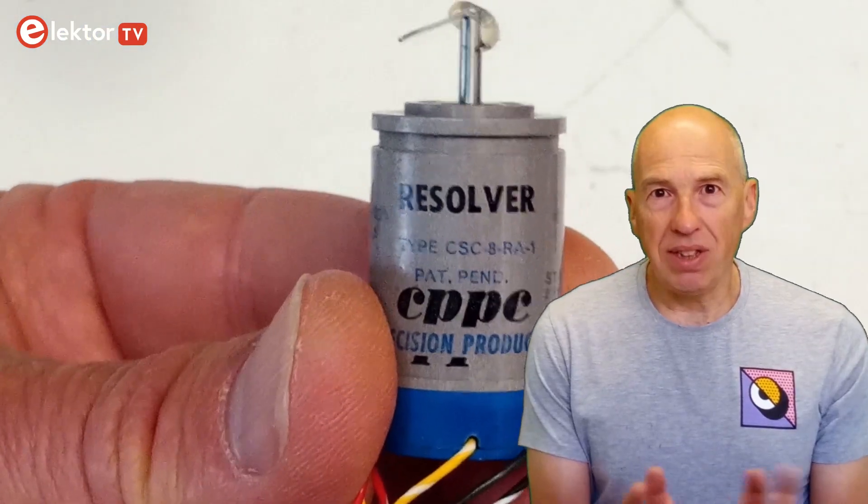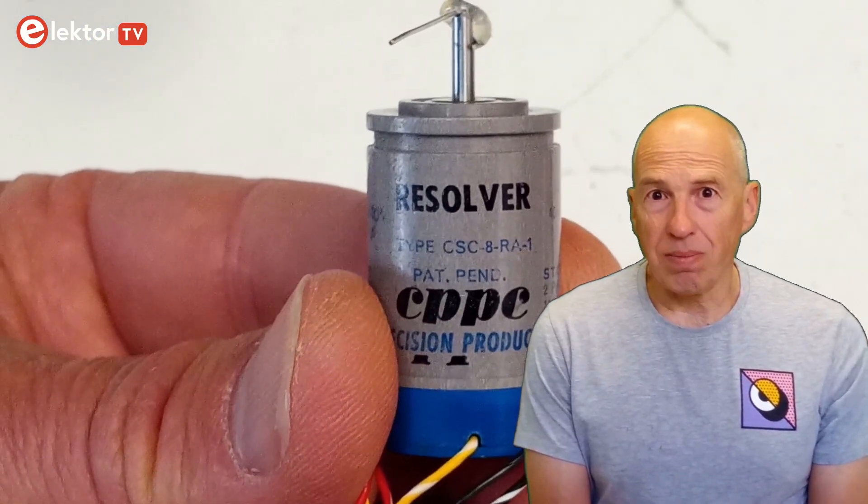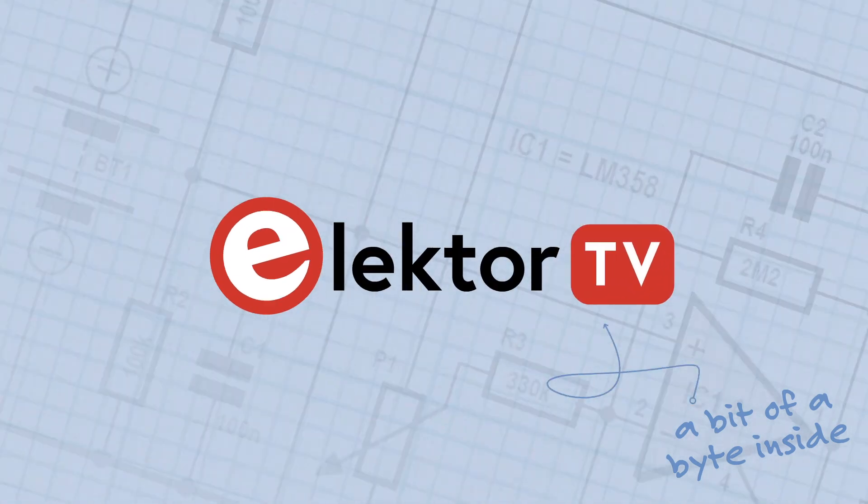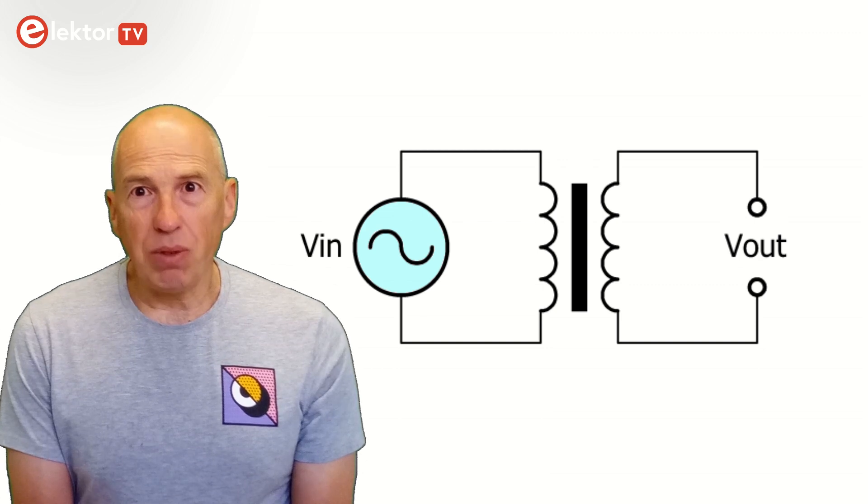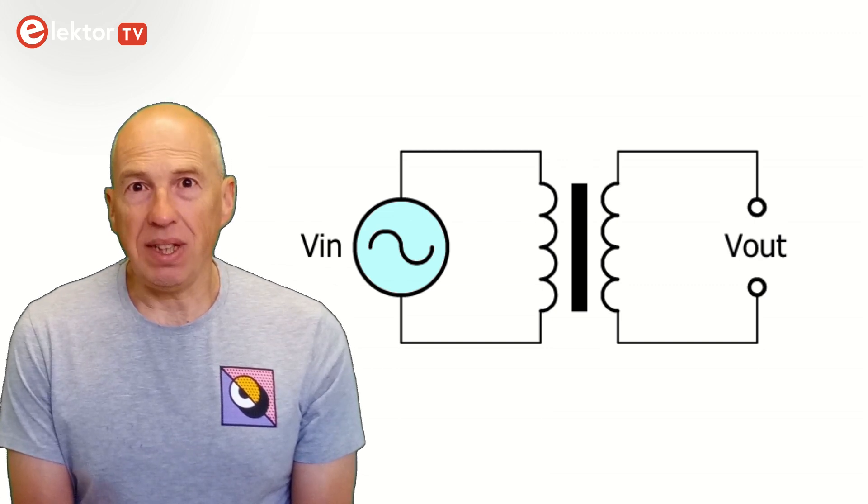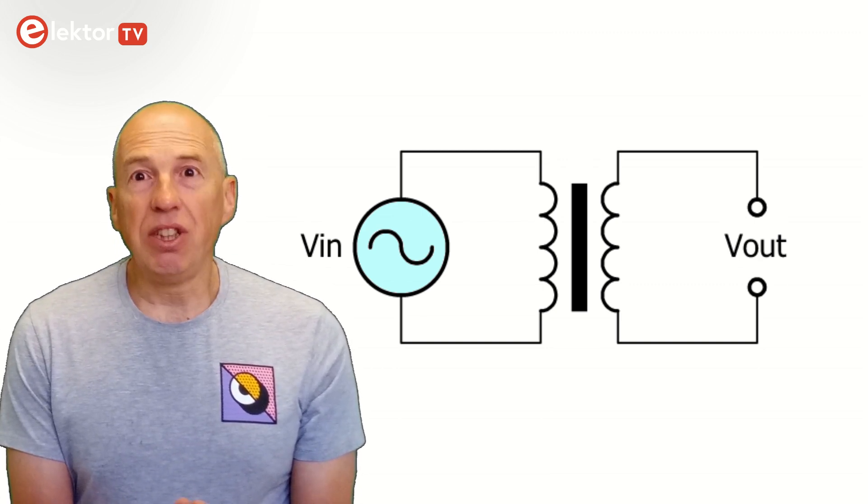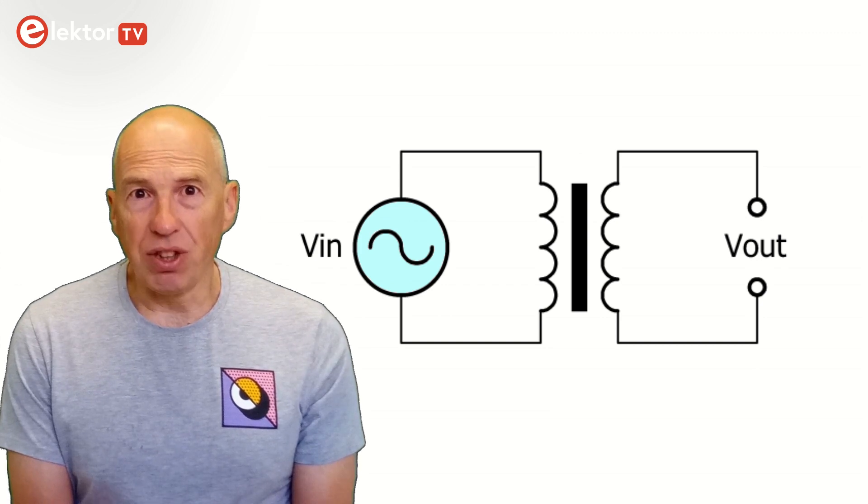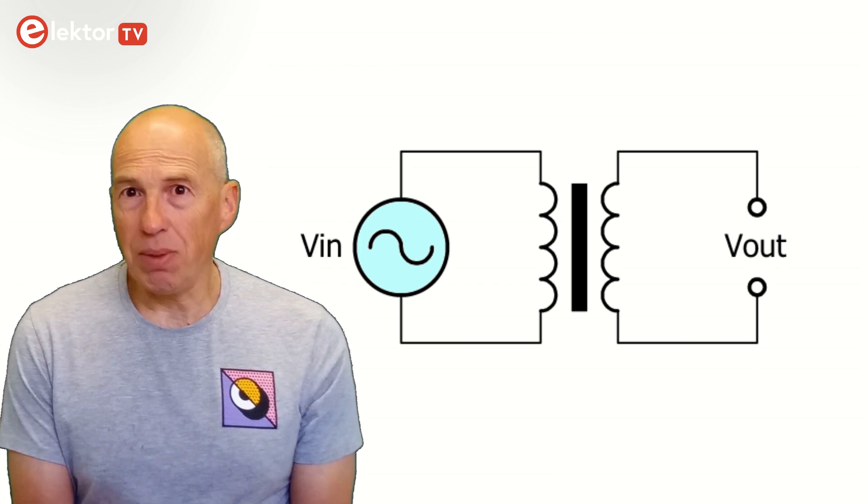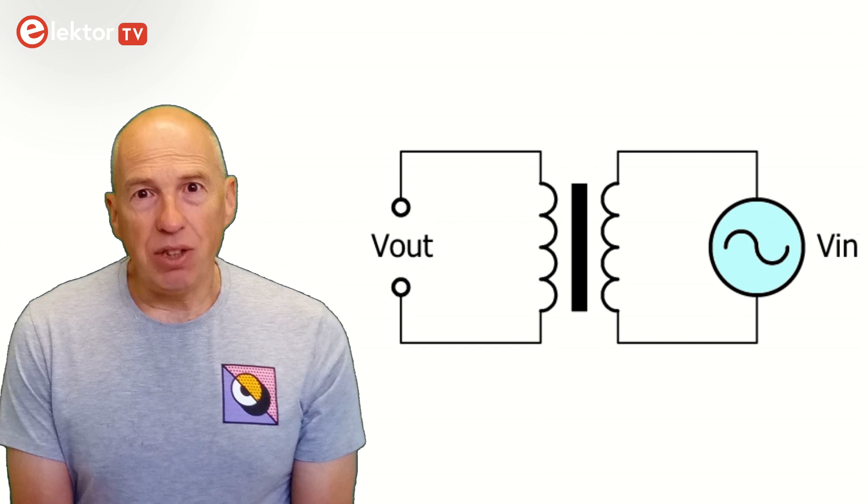So, what is a resolver and how does it work? Simply put, a resolver is a transformer with a fixed winding and a rotating winding. Like a transformer, a resolver only works with AC voltages, and, again like a transformer, the input signal can be applied to either winding.